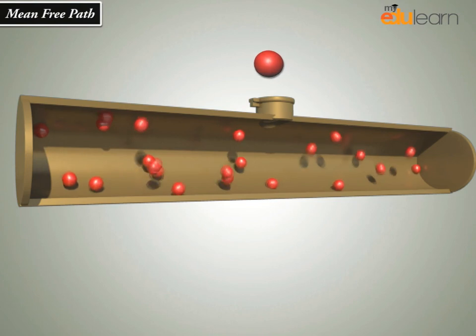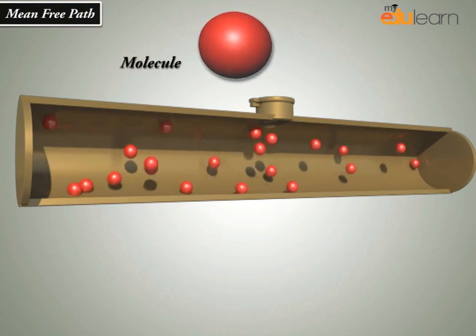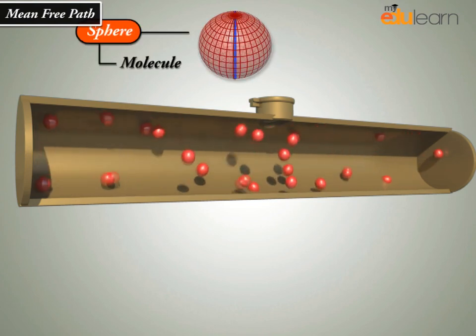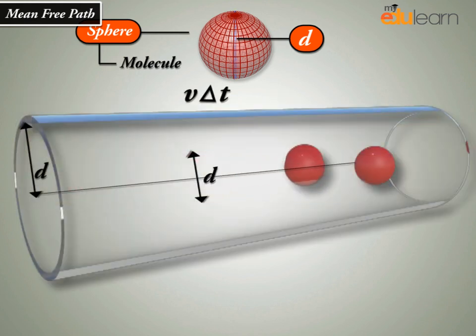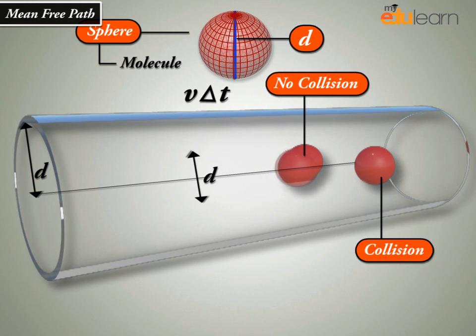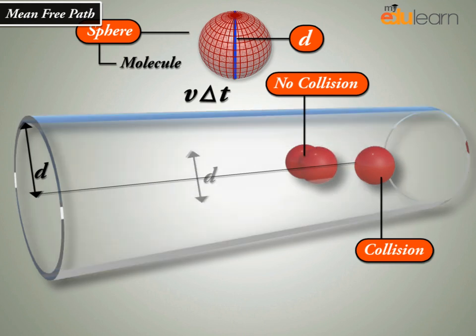Suppose the molecules of a gas are spheres of diameter D. Focus on a single molecule with the average speed V. It will suffer collision with any molecule that comes within a distance D between the centers.